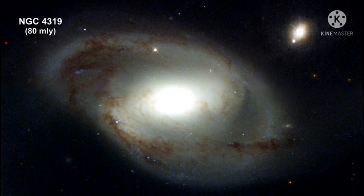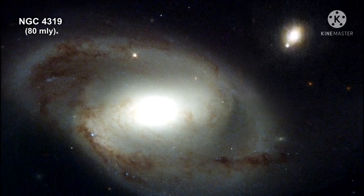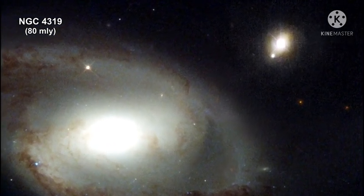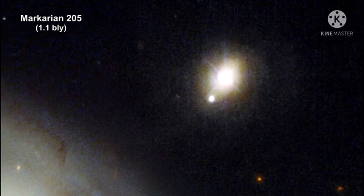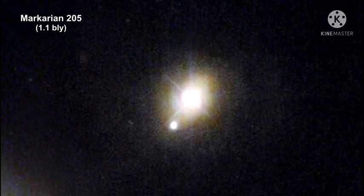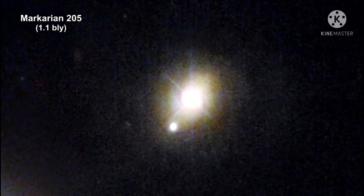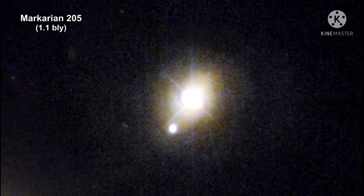You might recognize NGC 4319. It is a galaxy in the Virgo supercluster. Of interest now is the small light at the upper right. It's the quasar called Markarian 205. It's 1.1 billion light-years away. Markarian is a relatively nearby quasar. Many quasars reside much further away.